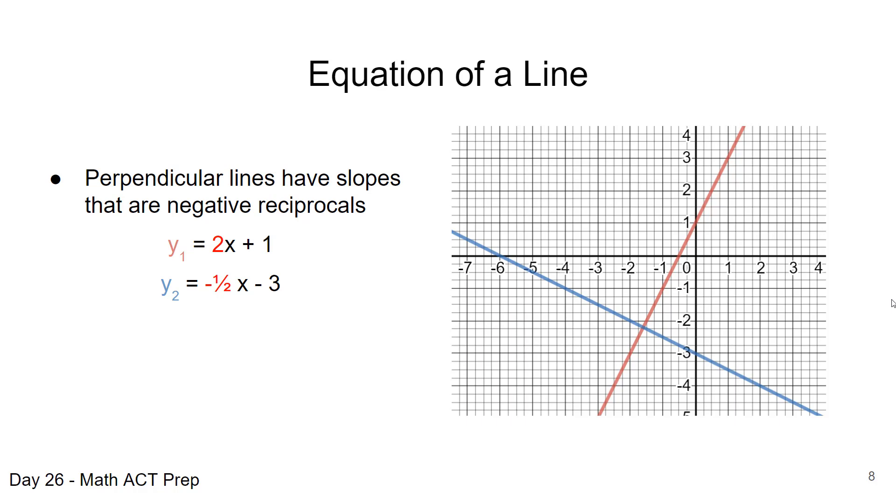Here we have our pinkish-red line, which is represented by 2x plus 1. And I know that because I can look at where it crosses the y-axis at 1, the point 0, 1. Our blue line is represented by negative 1 half x minus 3. So the relationship between the slopes of perpendicular lines is that they are negative reciprocals of one another. We go from 2 in the line in the lighter red to the negative 1 half, or the slope of the line in blue.